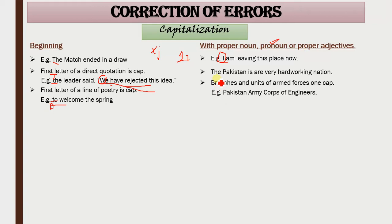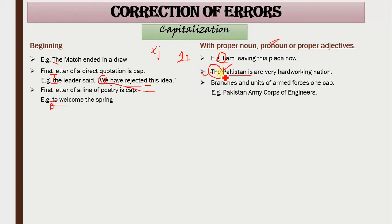For proper adjectives: Pakistanis, Indians, and Chinese are proper adjectives derived from the proper nouns Pakistan, India, and China. All proper adjectives — their first letter is written in capital. For example, Pakistani P capital, Chinese C capital, Indian I capital. Also note that article 'the' is always used with all proper adjectives.